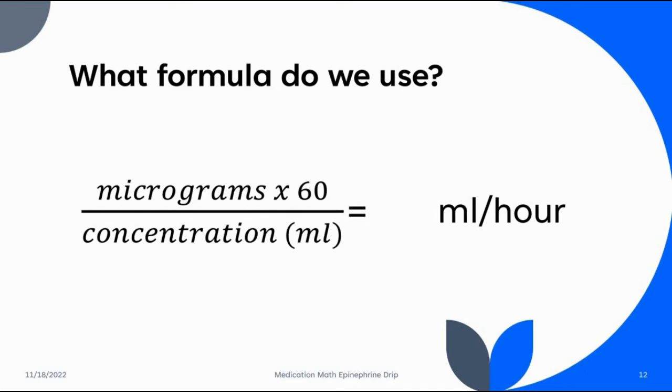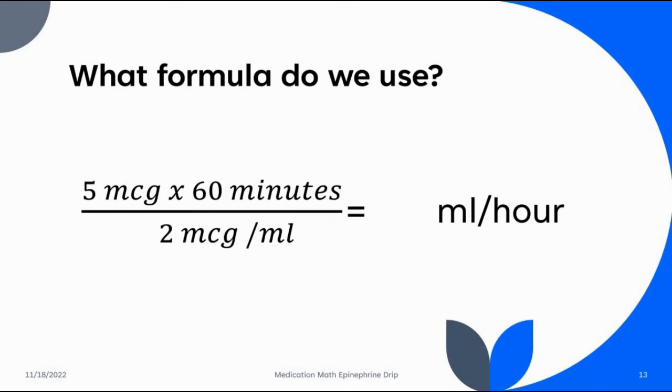Here's the formula again: micrograms, which we know is going to be five, times 60 in order to convert minutes to hours. And now we know at the bottom we're going to put two micrograms per milliliter. So let's plug in those numbers: five micrograms times 60 minutes divided by two. And you do the math and you find you're going to program your pump for 150 milliliters per hour. And that will give you your five micrograms per minute infusion.